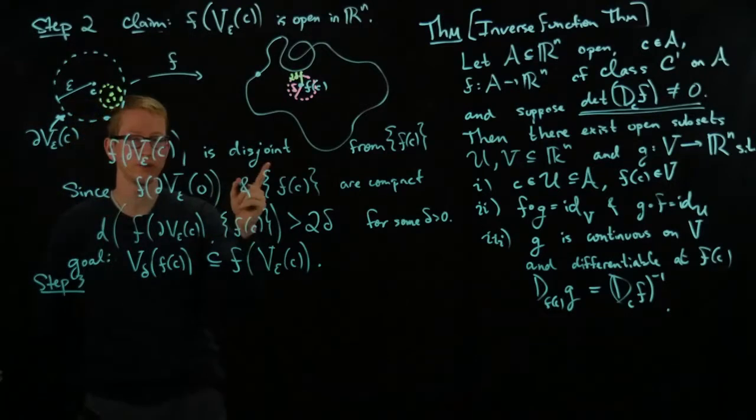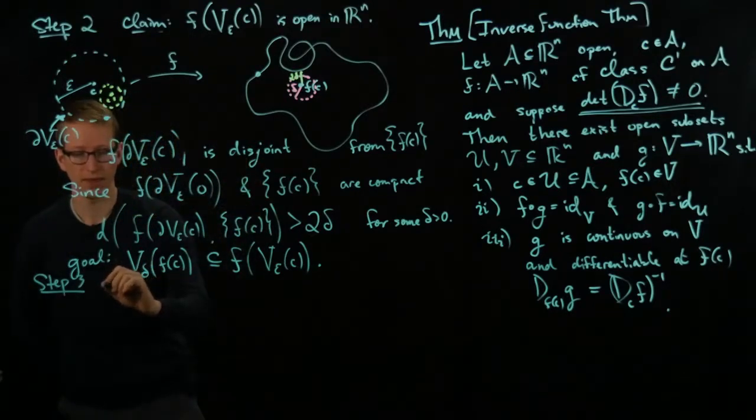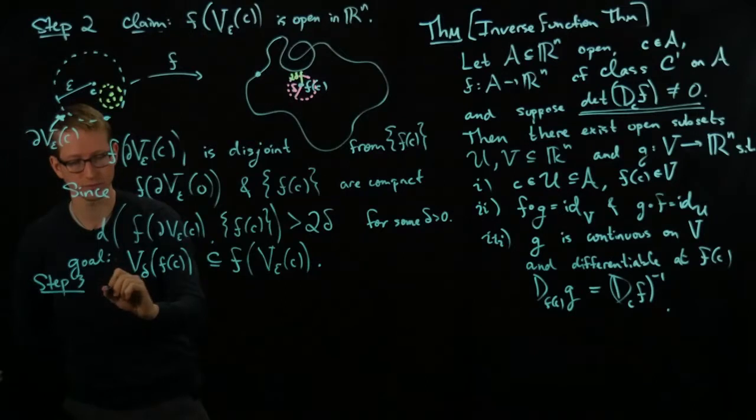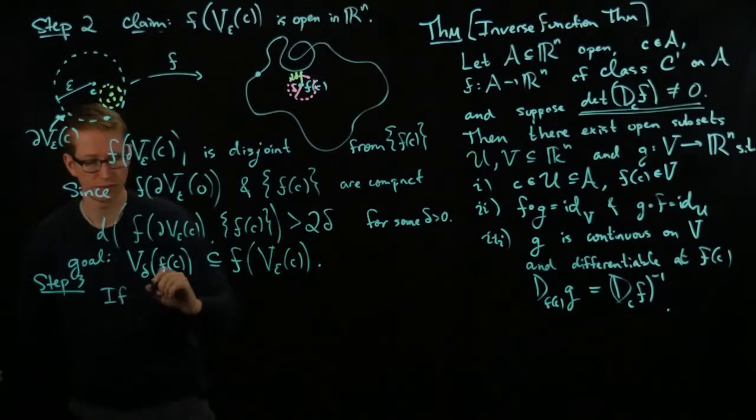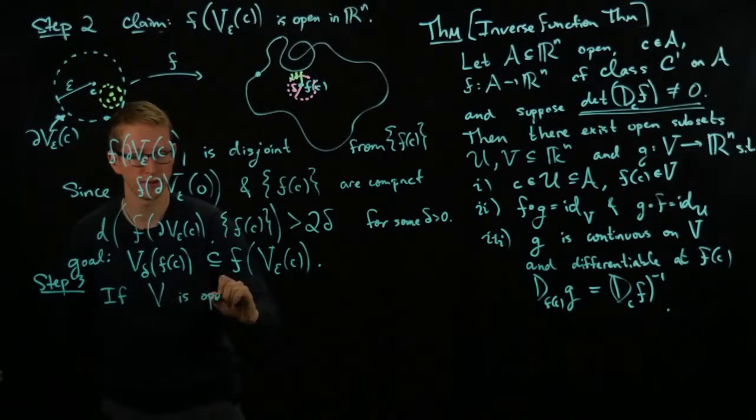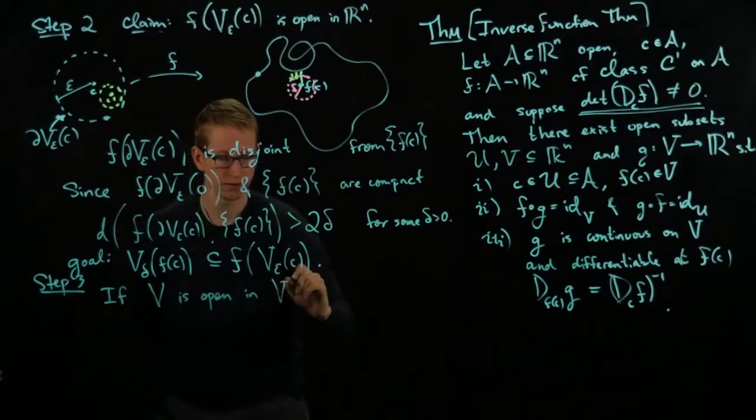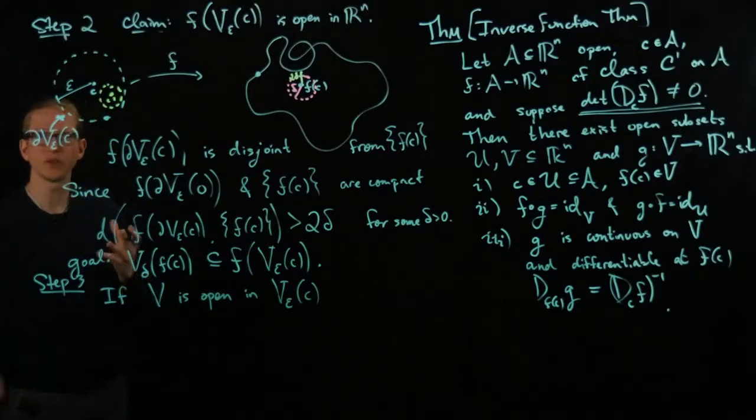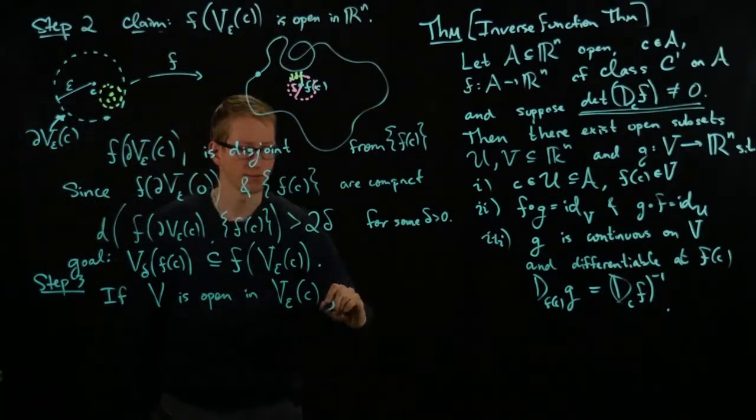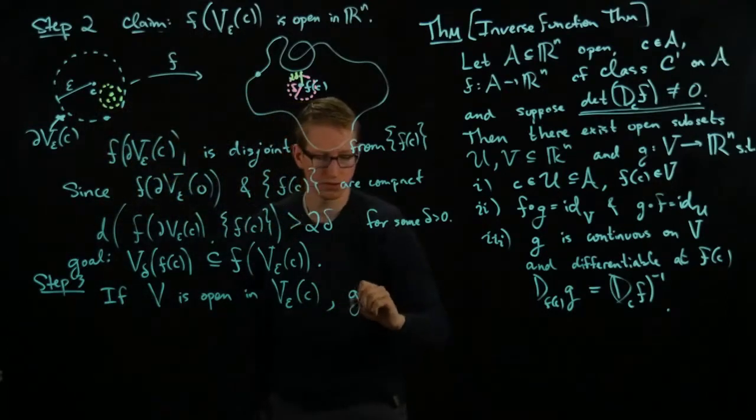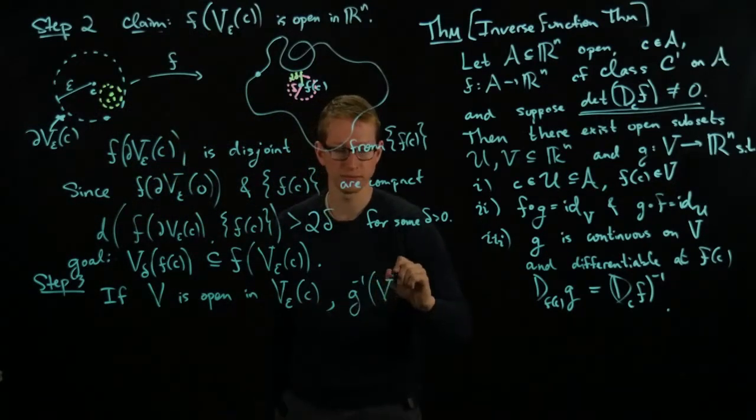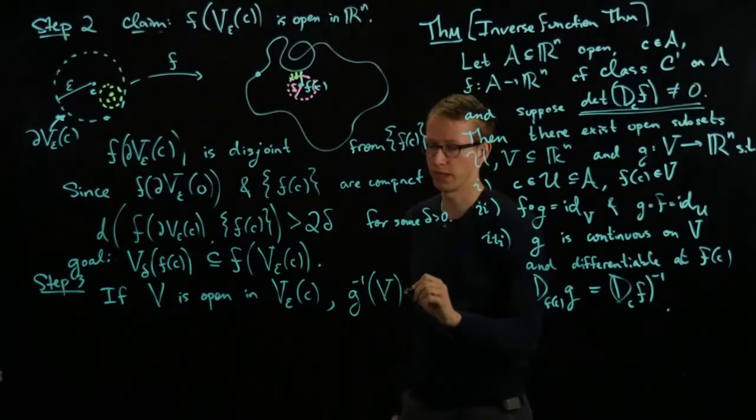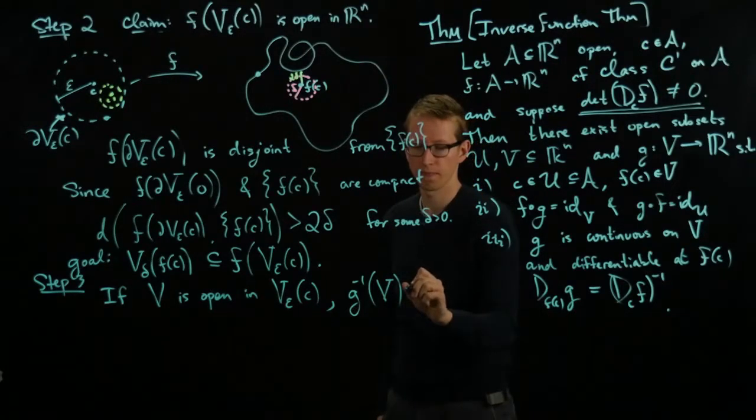Now, this actually follows from the previous step. But for the following reason, and the other alternative definition of what it means for function to be continuous. So if we set, if, let's say, W is open in this domain here, then what we want to do is we want to look at the inverse image of this open domain under G. Then G inverse of this open set V better be open. And if it's open, then we've proven what we want to prove, namely that G is continuous.